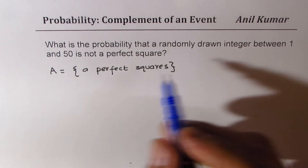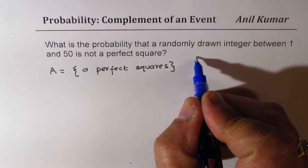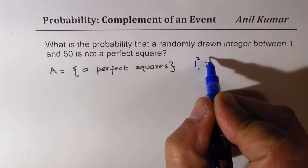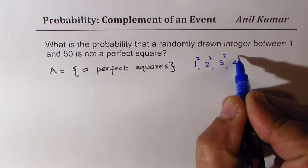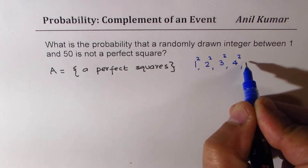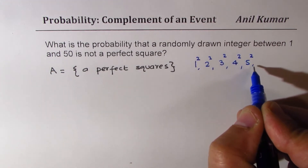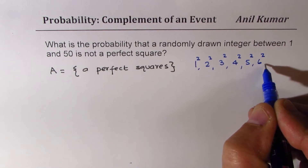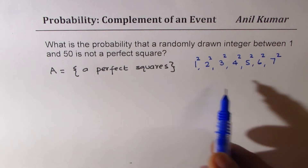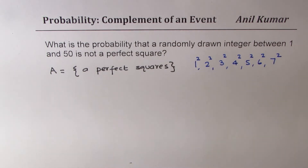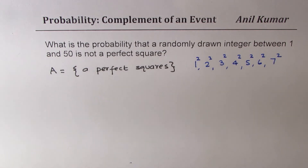For integers between 1 to 50, it is 1 squared which is 1, 2 squared is 4, 3 squared is 9, 4 squared is 16, 5 squared is 25, 6 squared is 36, and 7 squared is 49. So these are the perfect squares — 7 of them — which are the total number of favorable events.